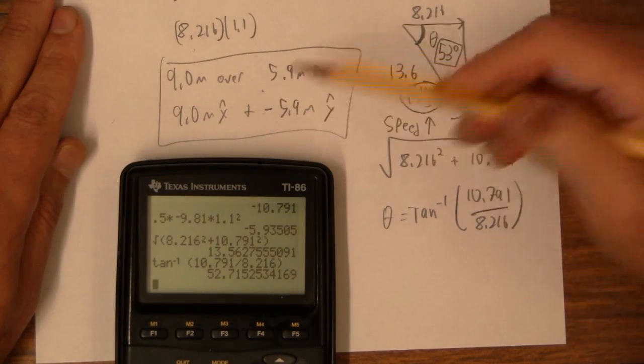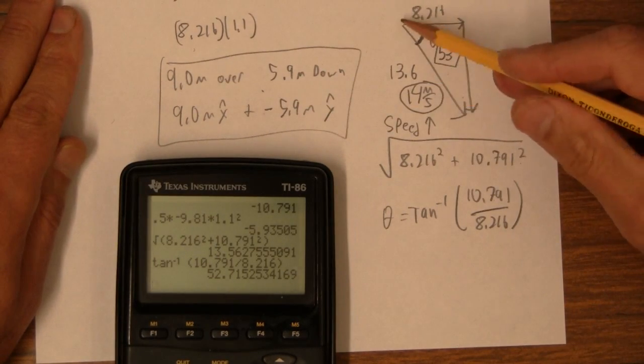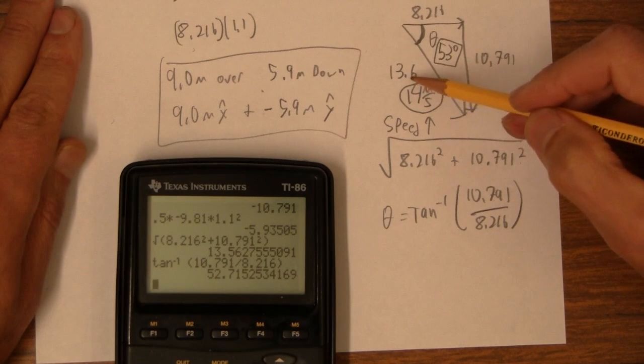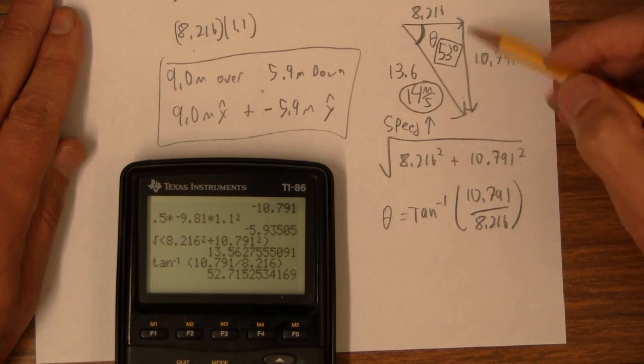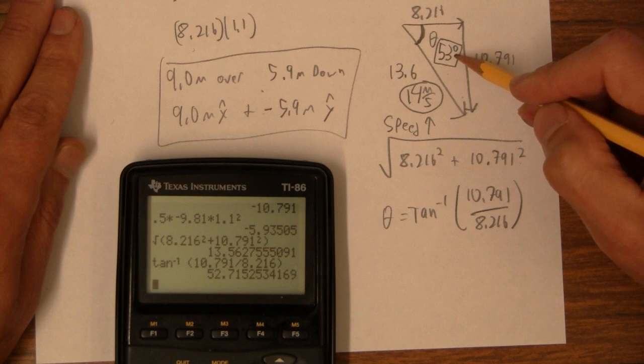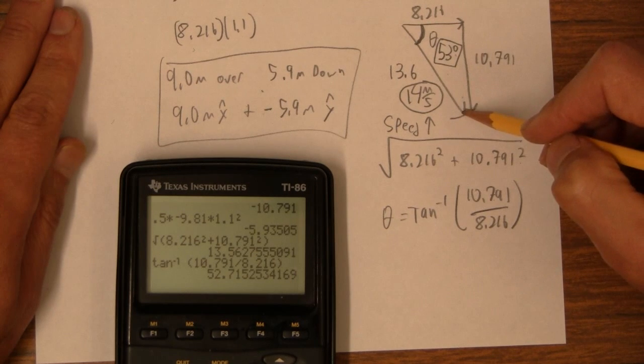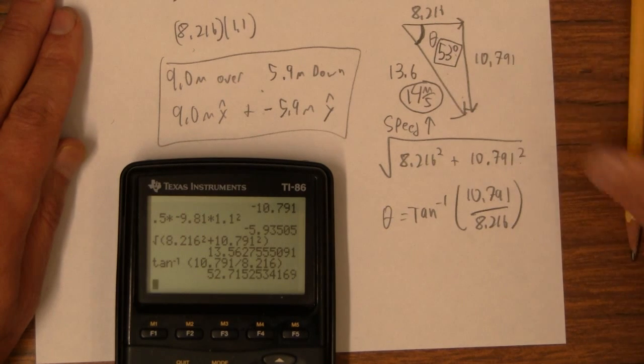So there's the position, there's the velocity, a speed of 14 meters per second or 13.56 or however, right? Okay, at an angle of 53 degrees below the horizontal. That's all there is to it.